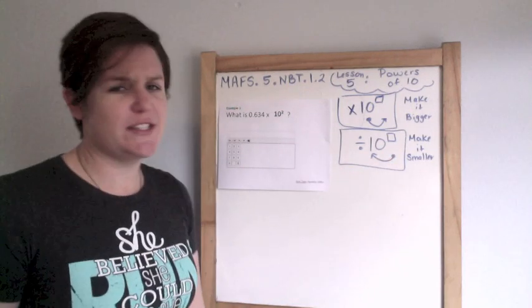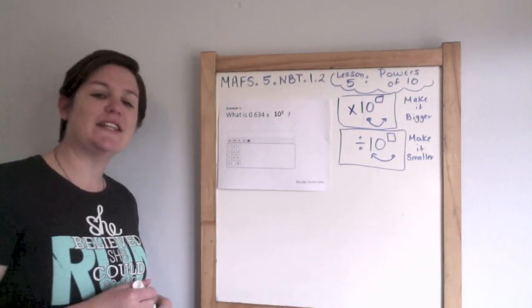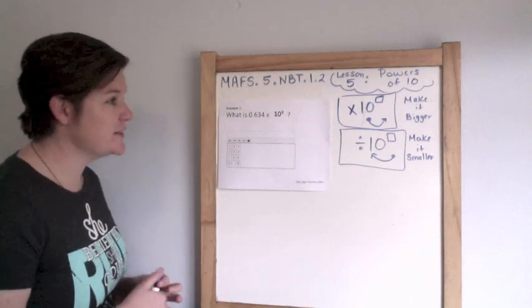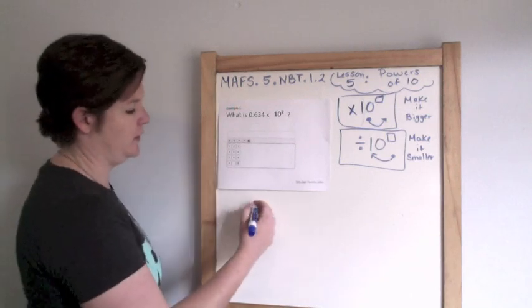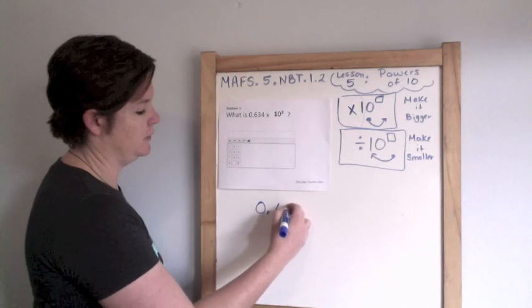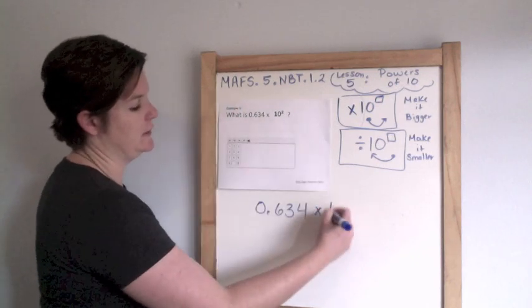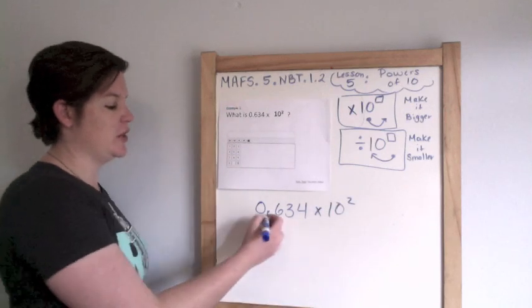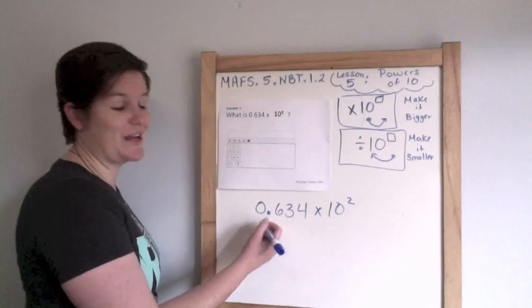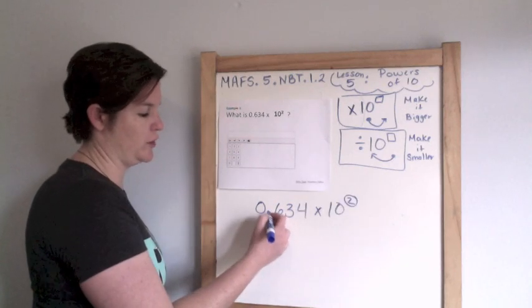So let's move on. Example one, what is 634 thousandths times 10 to the second power? So because we are multiplying by 10 to the second power, we are making our number bigger. So we are moving it to the right. Two times, because our power is two, so two jumps.